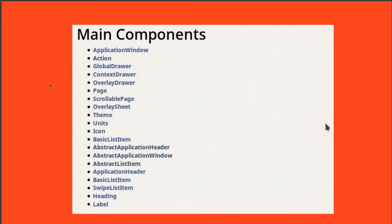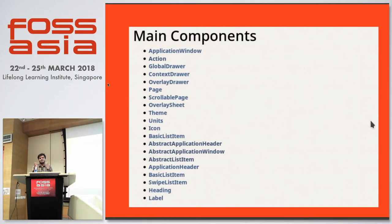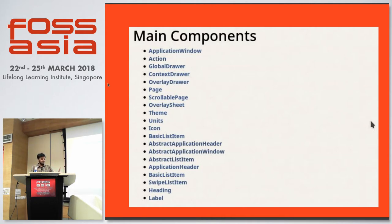Kirigami has a lot of components, just like QtQuick has loads of components. These are some of the components provided. A lot are self-explanatory — for instance, Units is basically a class that lets you decide spacing so you don't have to hardcode minimum spacing between rows or columns. Application header should tell you what it is. Actions are basically menu items and such.